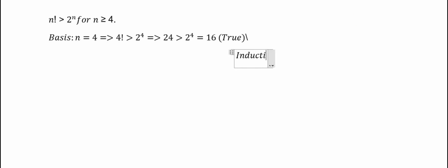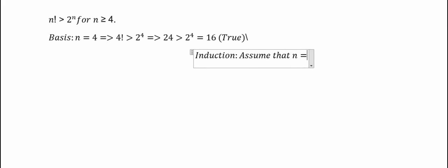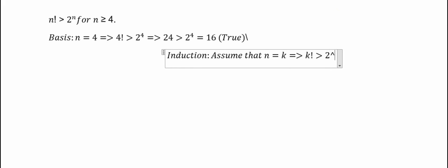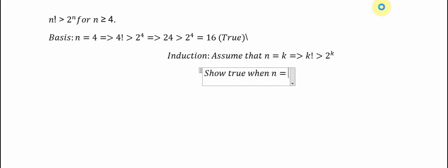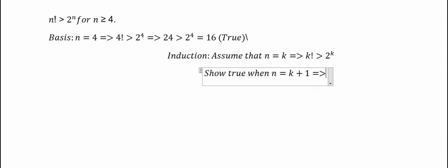Now for the inductive step: assume that n equals k, so we have k factorial greater than 2 to the power k. We then show it is true when n equals k plus 1, so we just put the formula in here and work on k plus 1 factorial greater than 2 to the power k plus 1.